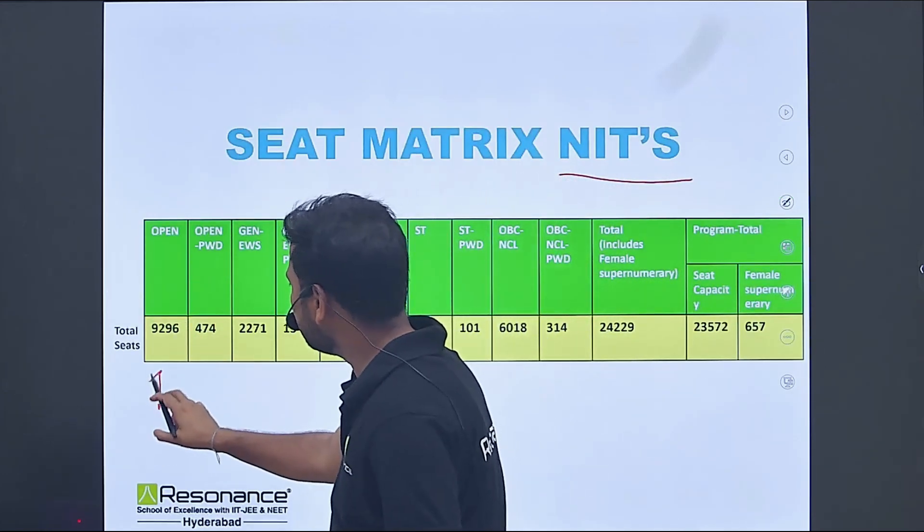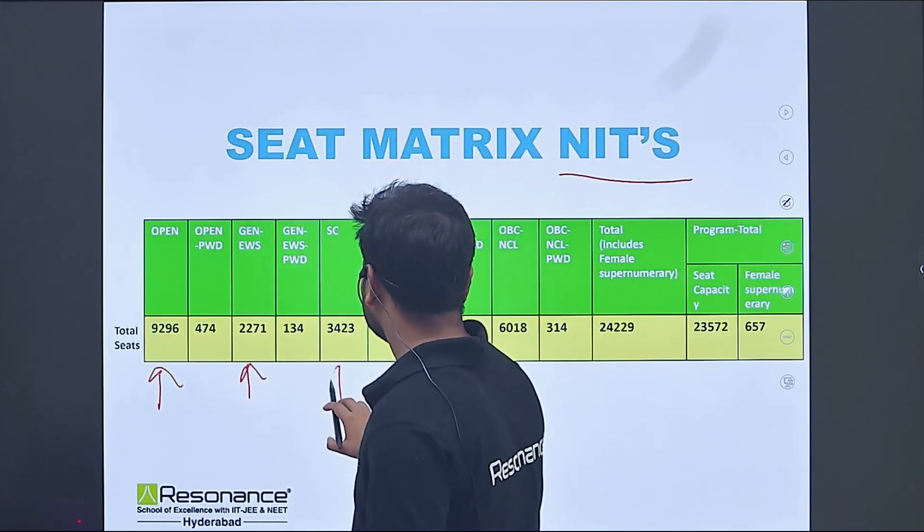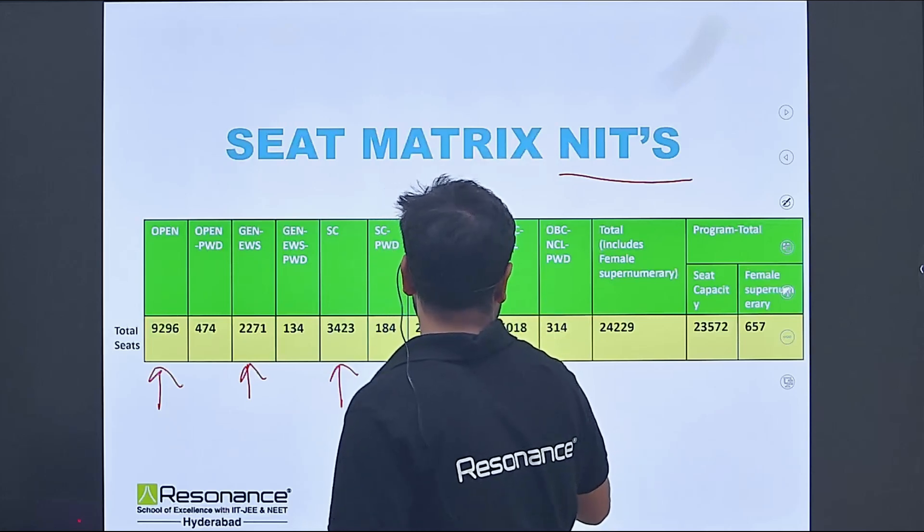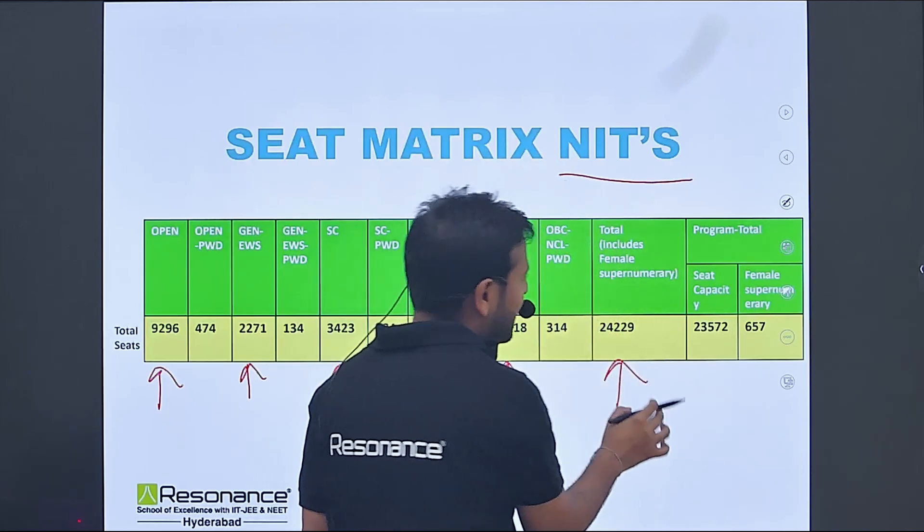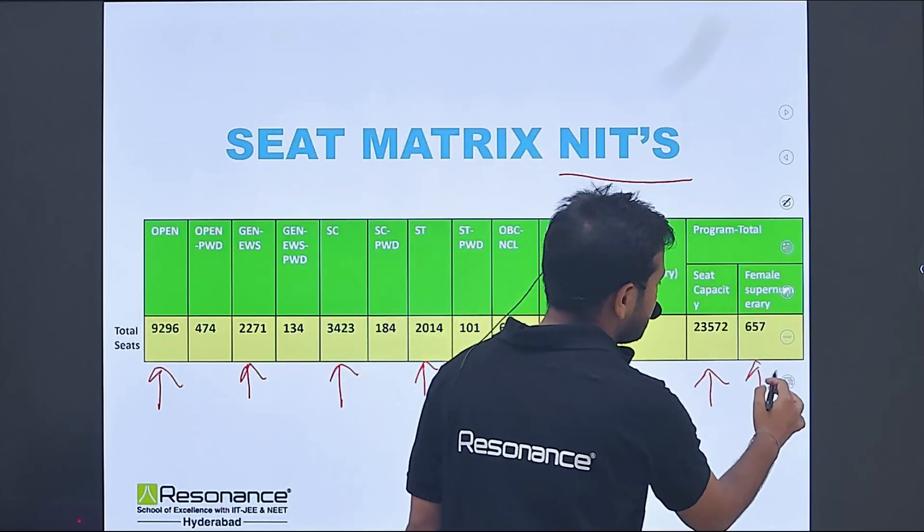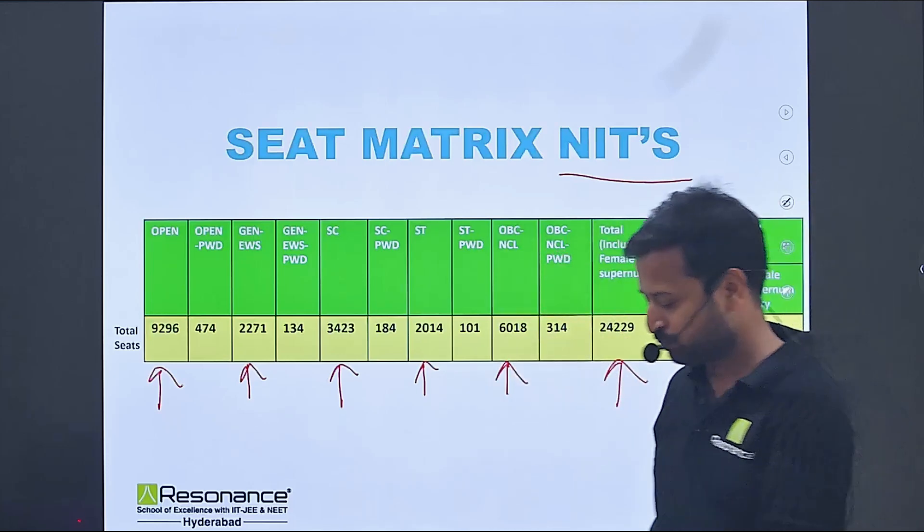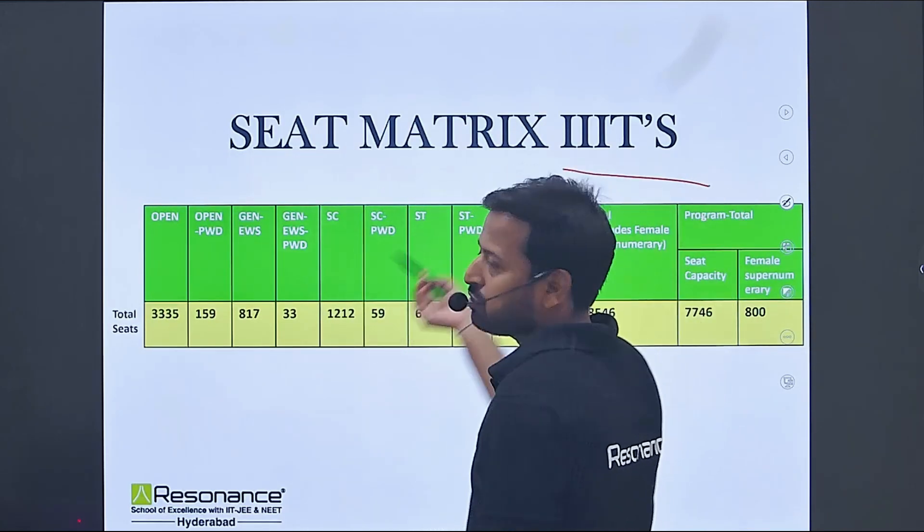For NIT seat matrix, we have open category 9296, general EWS 1776, SC 22271, ST 2014, OBC NCL 6018, total including female supernumerary 24229, seat capacity 23572, and female supernumerary 657.